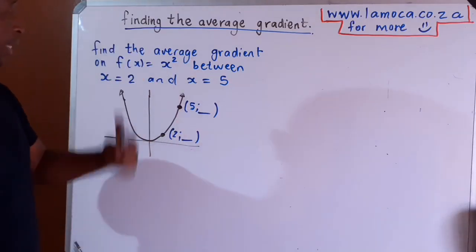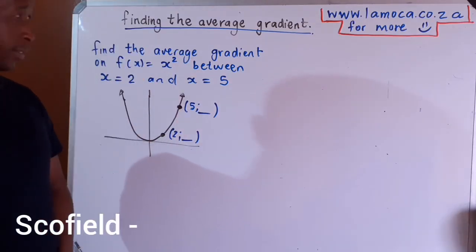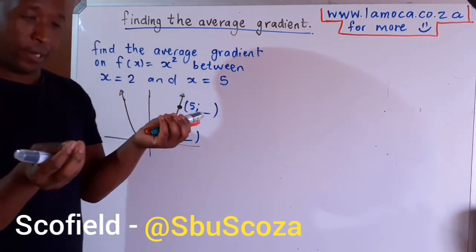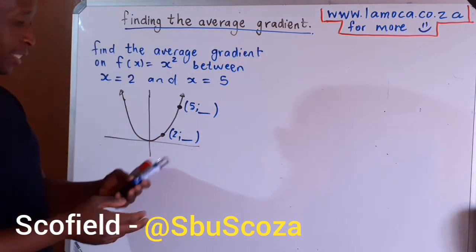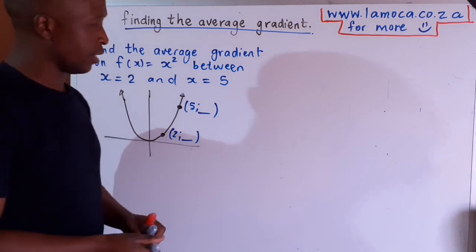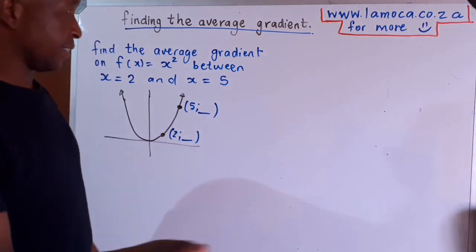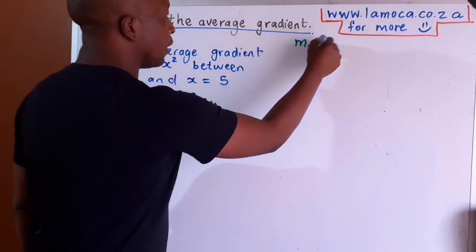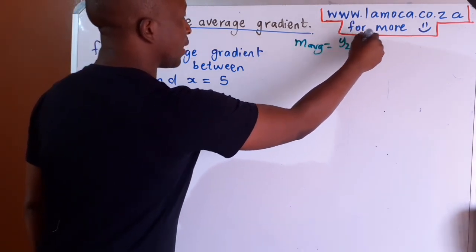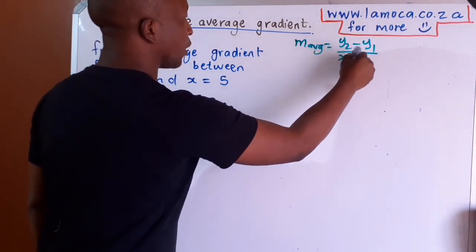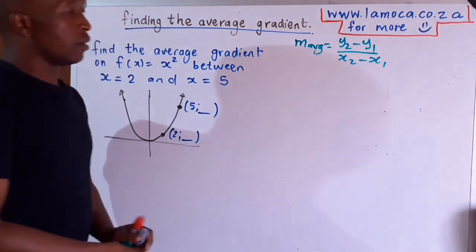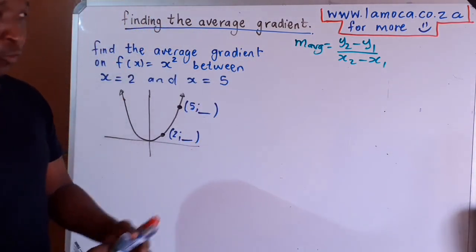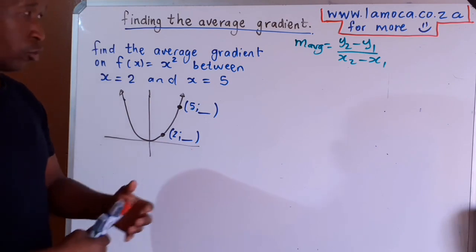Let's try and see if we can help each other understand how to find the average gradient between two points. The concept of average gradient is not something new — it's what you've been doing since grade 9. We all know that the average gradient is given by y2 minus y1, all over x2 minus x1. To work out the gradient between two points, you obviously need the coordinates of both those points.